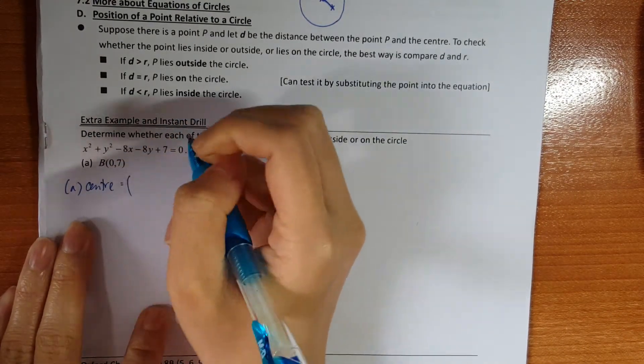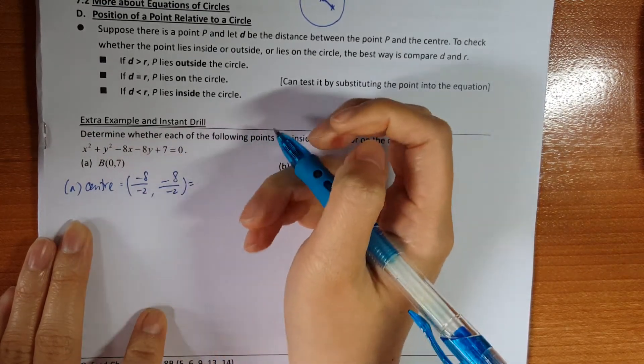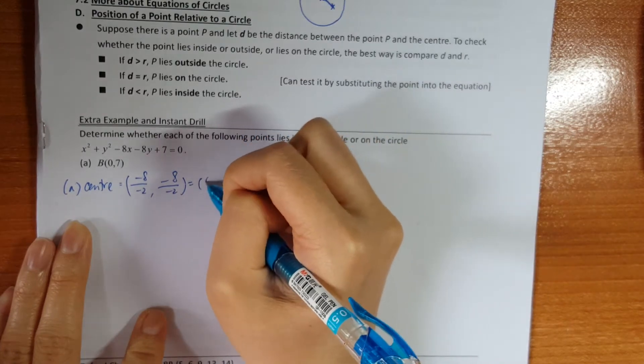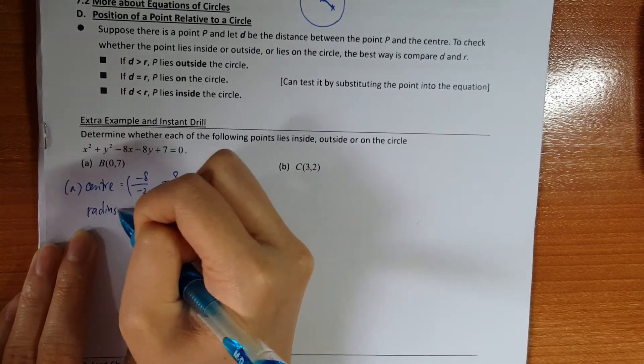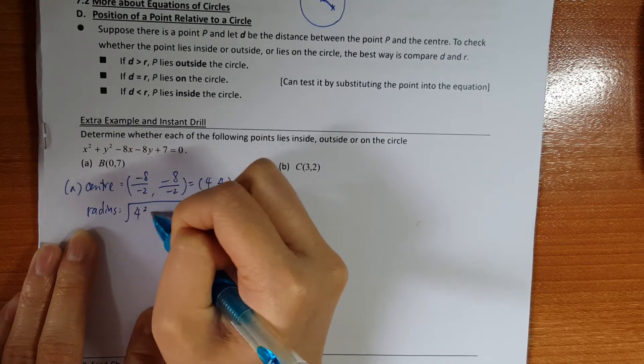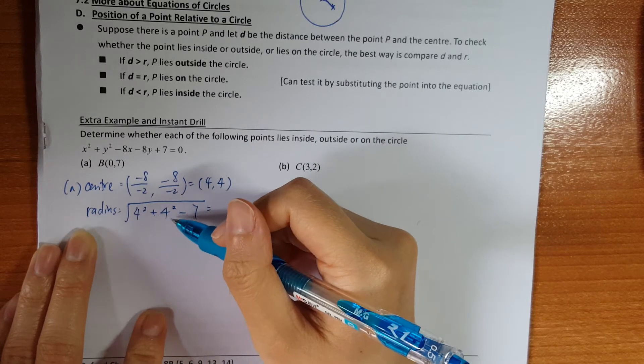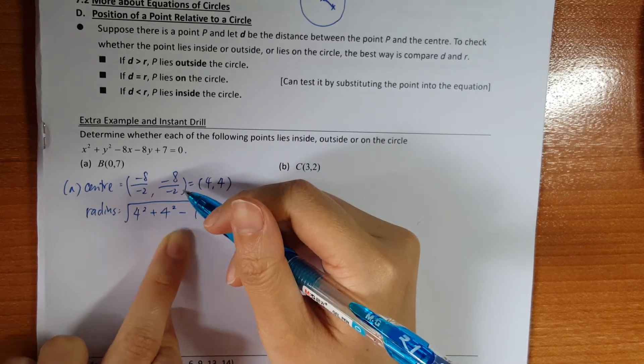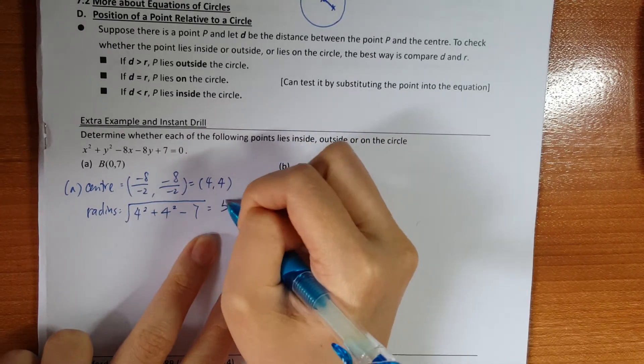The center would be negative x divided by negative 2, negative y divided by negative 2. So it would be (4, 4). And then the radius would be 4 squared plus 4 squared minus 7, so would be 32 minus 7, which would be 25. 25 square root would be 5.